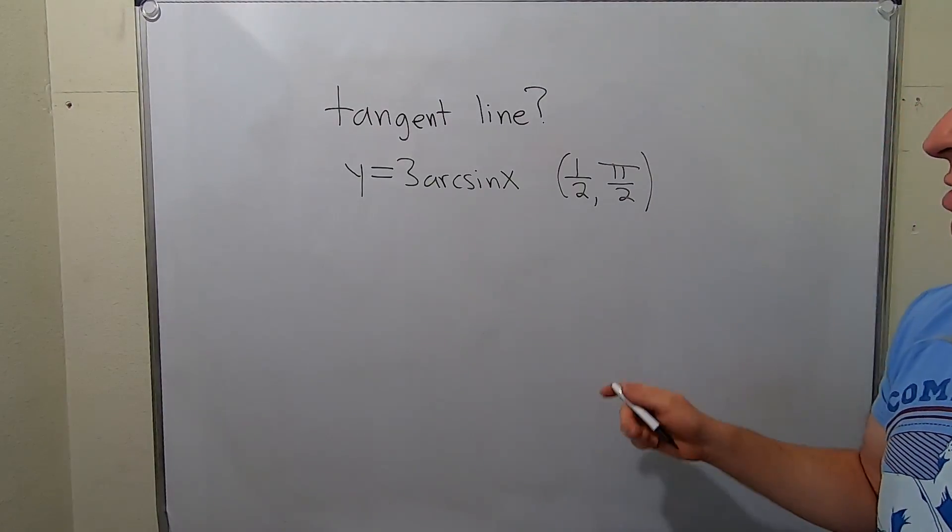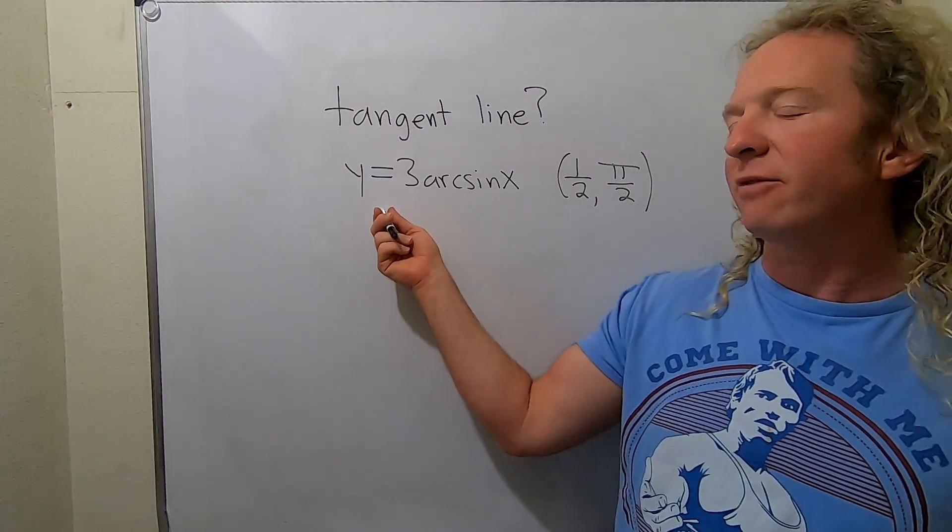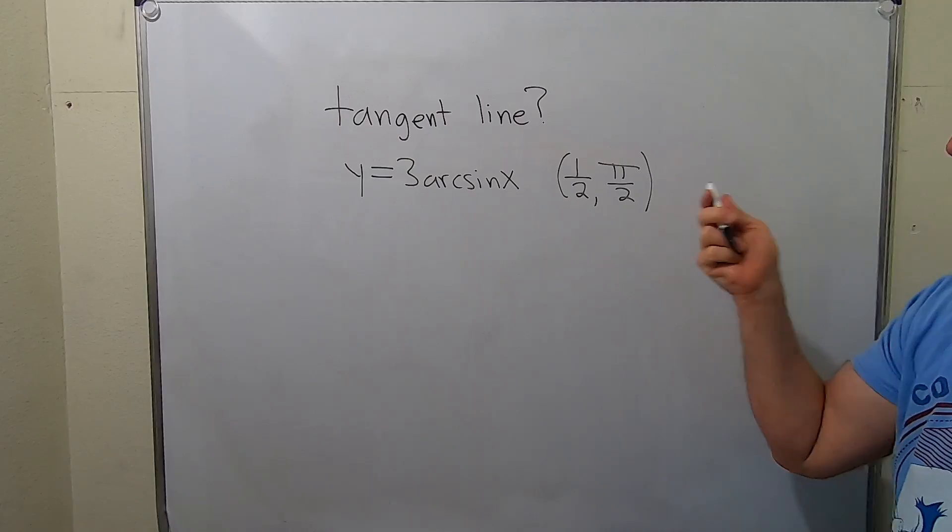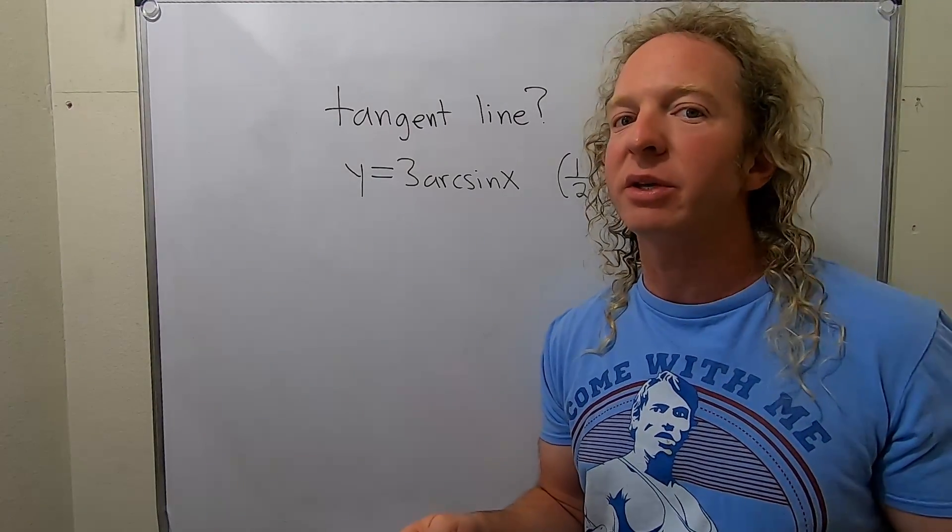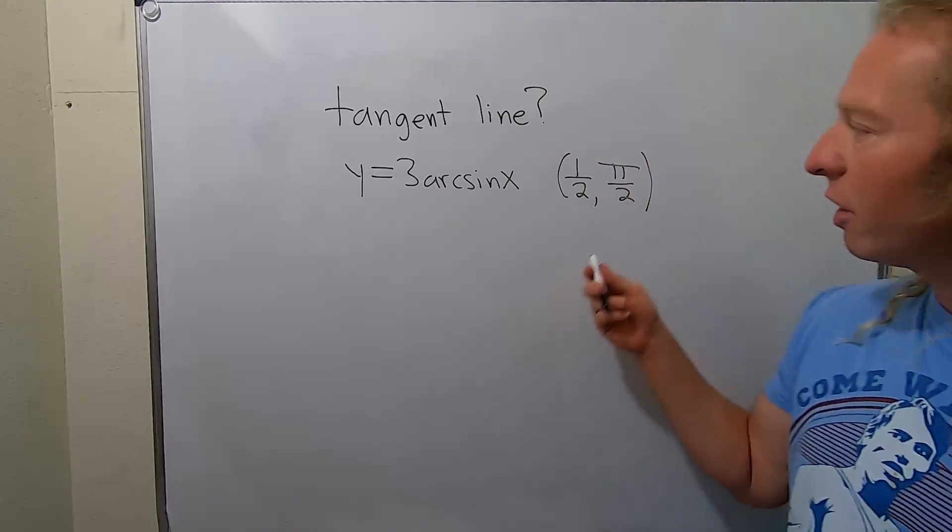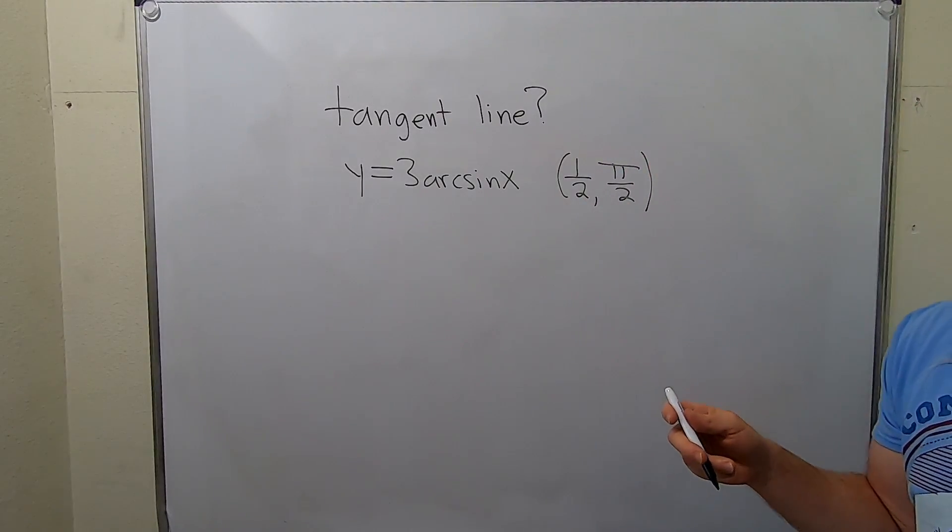In this problem we're going to find the equation of the tangent line to the graph of this function at this point here. So to find the equation of the tangent line we need two things: we need a point and we need a slope. They already give us the point, so we just need the slope.